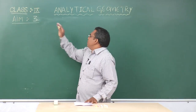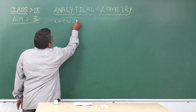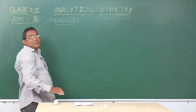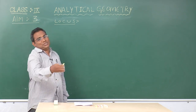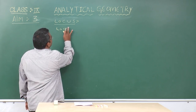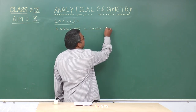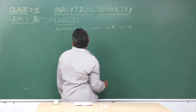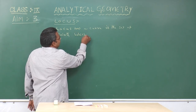In Aim 3, we discuss the concept of locus. Locus is the set of points in the plane which satisfies the given condition. Locus, or a curve, is the set of points in a plane which satisfies the given condition.